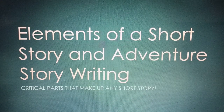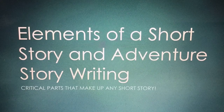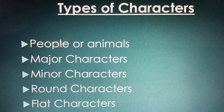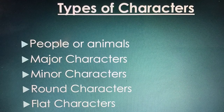Here are your notes for elements of a short story and adventure story writing. We are going to write down all of the critical parts that make up any short story. The first part is types of characters. We have people or animals, major characters, minor characters, round characters, and flat characters. We are going to break down what those things actually mean.